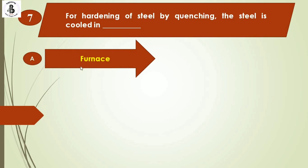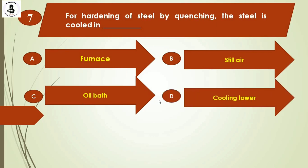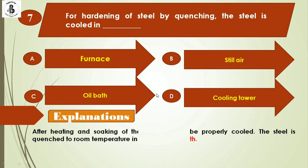Question 7: For hardening of steel by quenching, the steel is cooled in — Option A: furnace, Option B: still air, Option C: oil bath, Option D: cooling tower. After heating and holding, the steel is quenched using rapid cooling with water or oil bath. Furnace cooling corresponds to annealing, and still air corresponds to normalizing. For quenching, it is always rapid cooling with water or oil bath. The right answer is Option C.